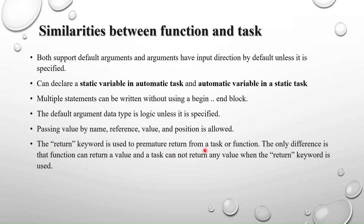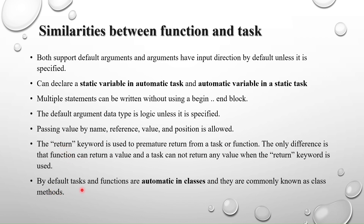The return keyword is used for premature return from a task or function. The difference is that a function can return a value using the return keyword, but in a task you cannot use it to return a value or expression. In a task, the return keyword only causes premature exit — meaning when it reaches the return statement, execution comes out of the task even if statements follow. You cannot use return to return a value from a task like you can in a function.